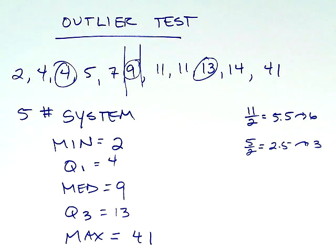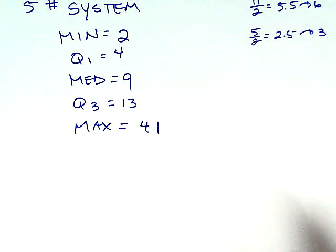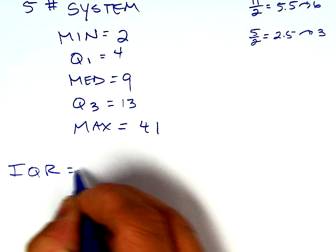Now we have all of our information. We have our five number system and now we can move on. If I were to do the box and whisker I'm pretty much done at this point, but today's lesson is more about the outlier test and how we can do that.